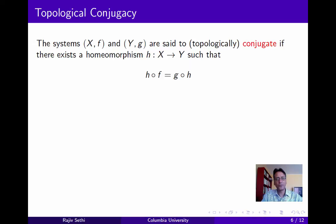Now consider the important notion of topological conjugacy. Suppose you have two dynamical systems, (X, f) and (Y, g). We say that these are topologically conjugate, or just conjugate, if there exists a homeomorphism h from X to Y such that the composition of h with f is equal to the composition of g with h.